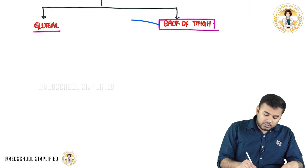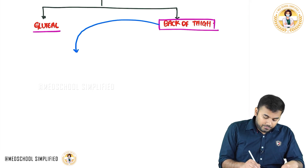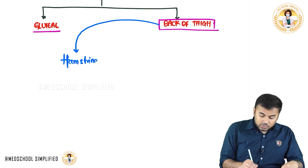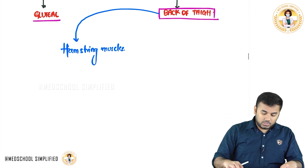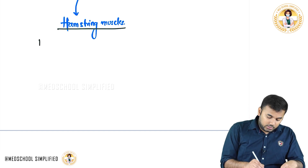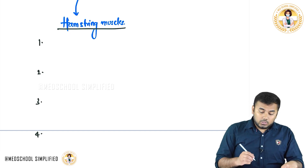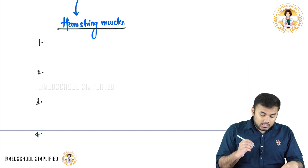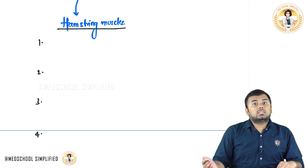All these muscles of the back of the thigh are called hamstring muscles. So how many hamstring muscles do we have? We have four hamstring muscles. The first two muscles are: one is half tendon and another one is called half membrane.